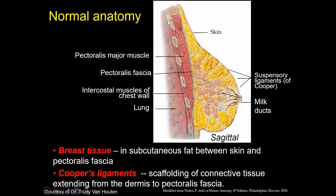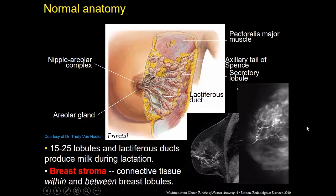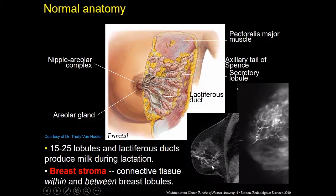Beneath the muscle, you'll have your ribs and chest wall. There are 15 to 25 lobules and lactiferous ducts that produce milk during lactation, all converging at the nipple-areolar complex. There's also breast stroma, which is the connective tissue within and between those breast lobules. We can see the ductal system on MRI imaging if there's proteinaceous or hemorrhagic debris in the ducts, or we can do a galactogram or ductogram where we inject radiopaque contrast into the ductal system and image it on mammography.